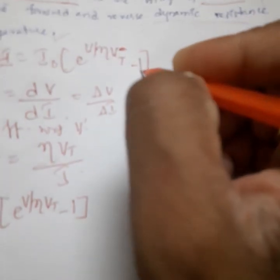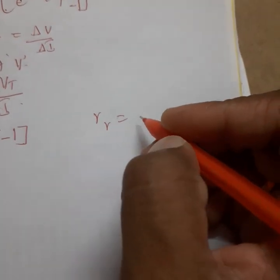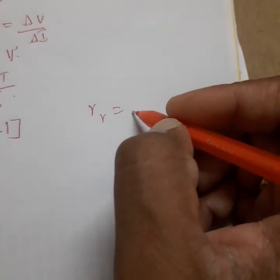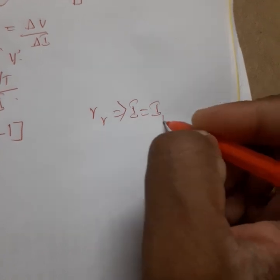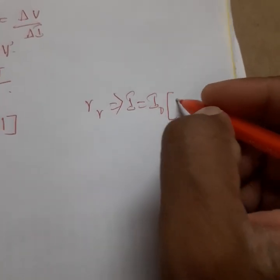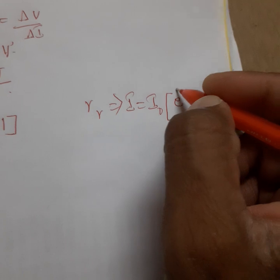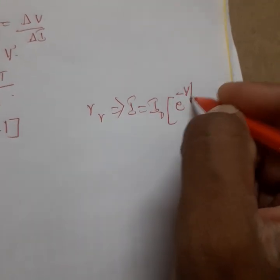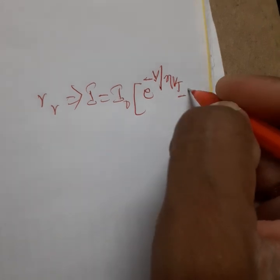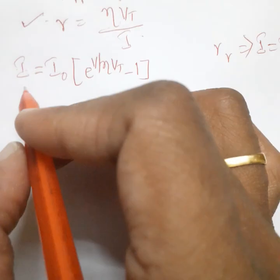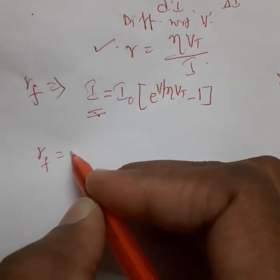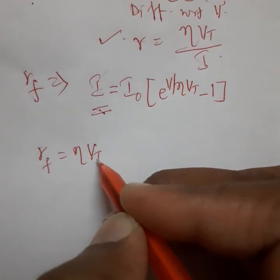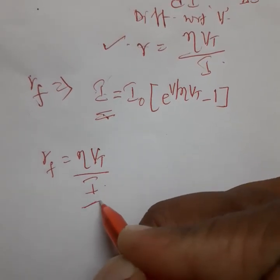For the forward current equation we include the minus 1 term. For the reverse dynamic resistance, the current is given as I = I₀ · e^(−V / η·Vt) − 1, using a negative voltage. After finding the current I, we substitute it into the dynamic resistance formula η·Vt / I.